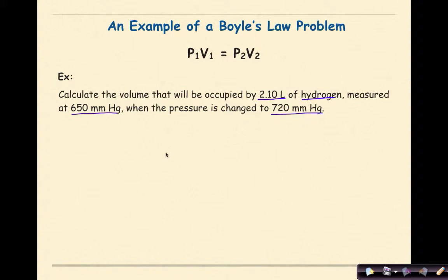First, I'll write out my formula: P1V1 = P2V2. Looking at this problem, it says calculate the volume occupied by 2.1 liters. So that 2.1 liters is my V1. So 2.10 liters, that's my V1.